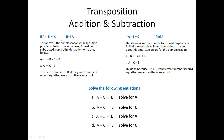Here, you have a plus b equals to c and you are supposed to find a. You want a to be the only thing on the left side. Since b is a positive letter, you would have to take it away from itself. And once you take it away from itself, you would have to do the same thing to the other side, which will leave you with a equals to c minus b. In other words, whatever you do to one side, you must do to the next side.